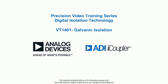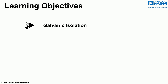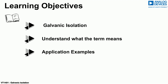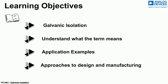Hello and welcome to the Analog Devices precision digital isolation technology training videos. This video is the first in the series and will go through galvanic isolation: what it is, why and where it is used. The key objective is to provide an understanding of what the term galvanic isolation means. We will go through some application examples of where it's commonly used, and also discuss different approaches to designing and manufacturing isolators.